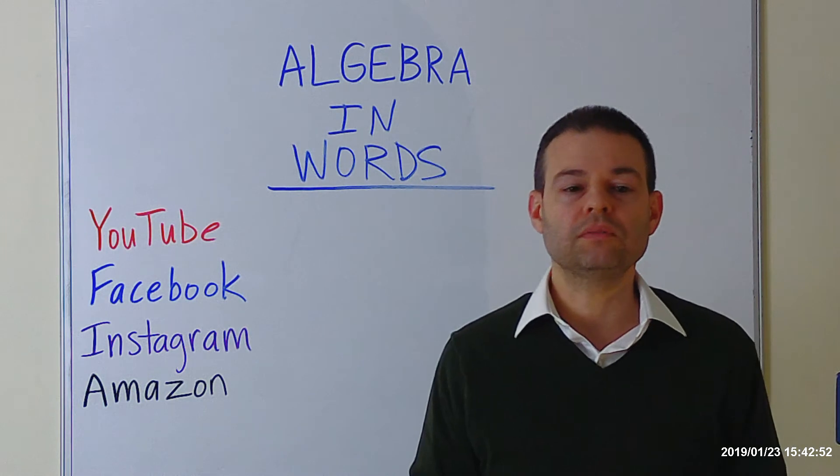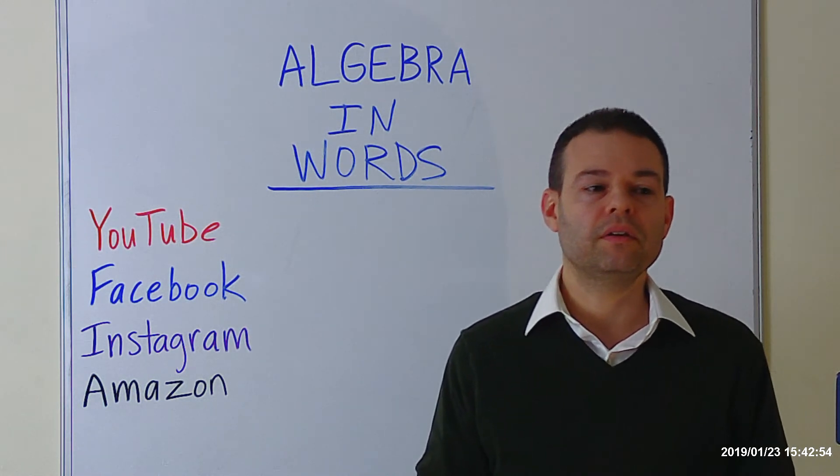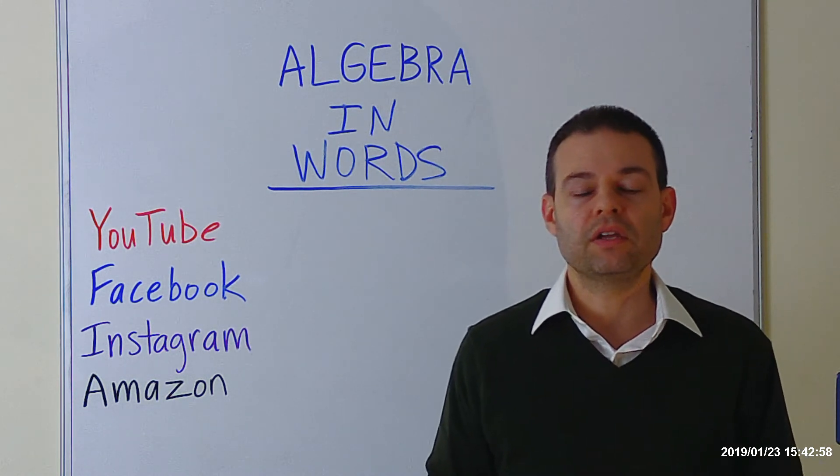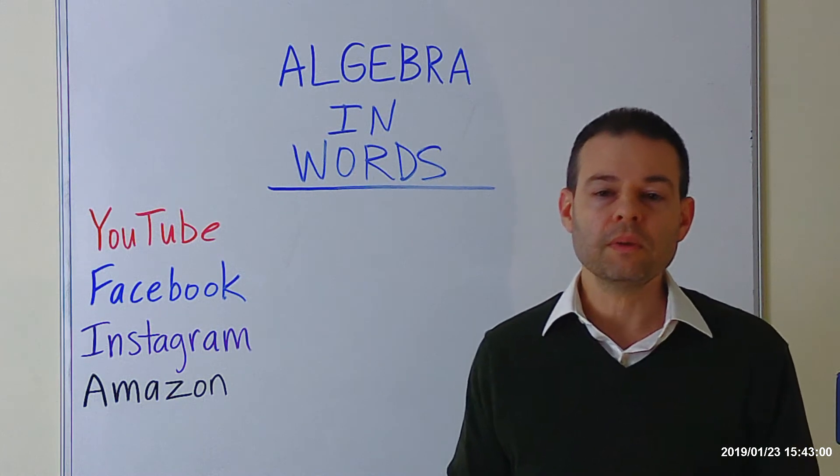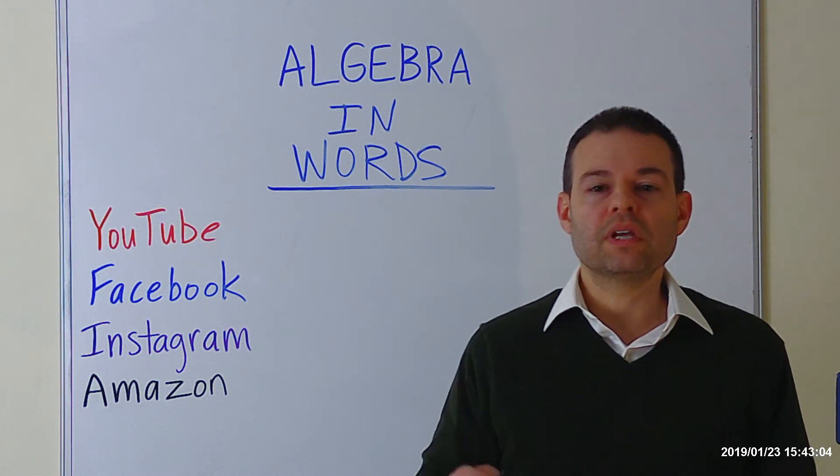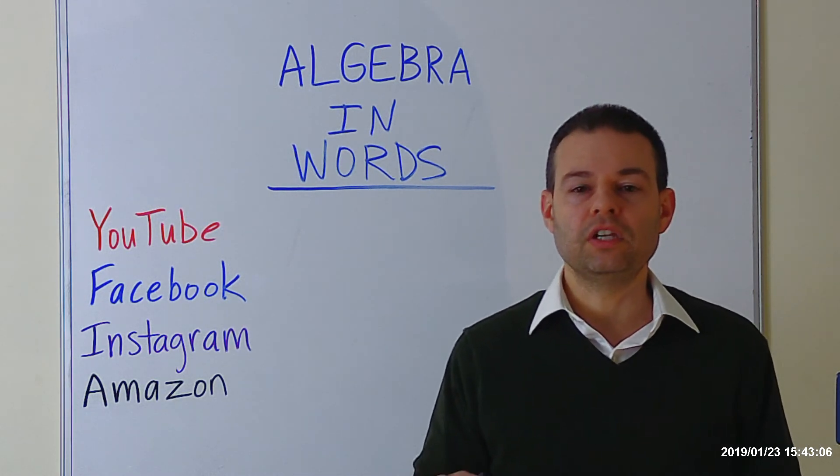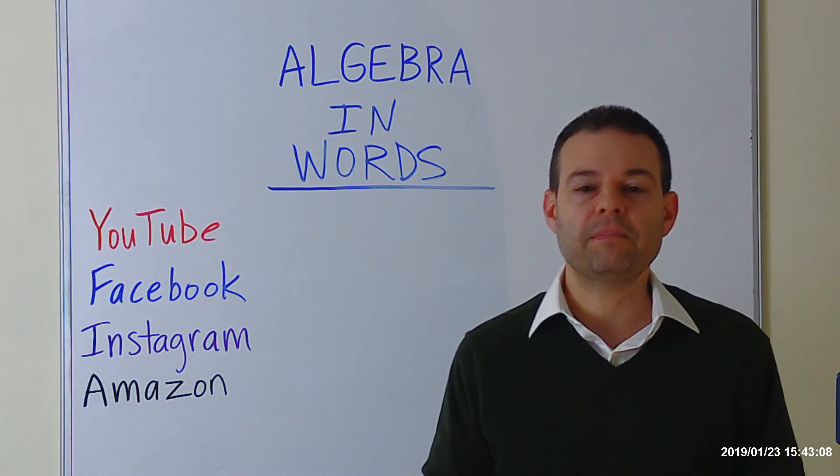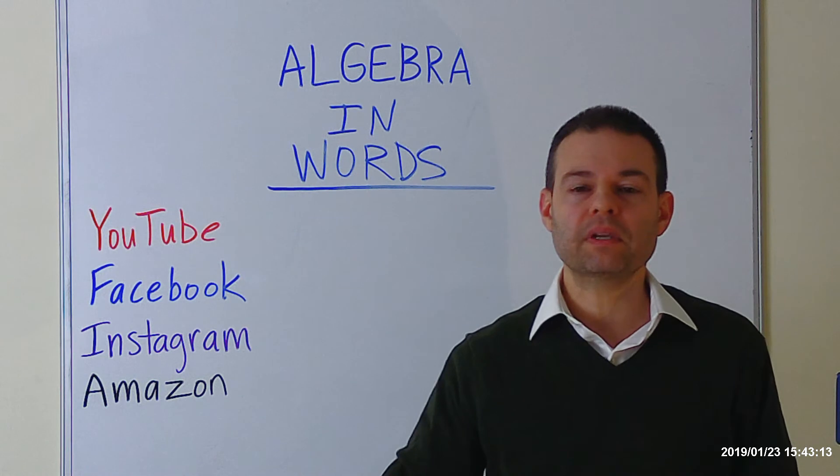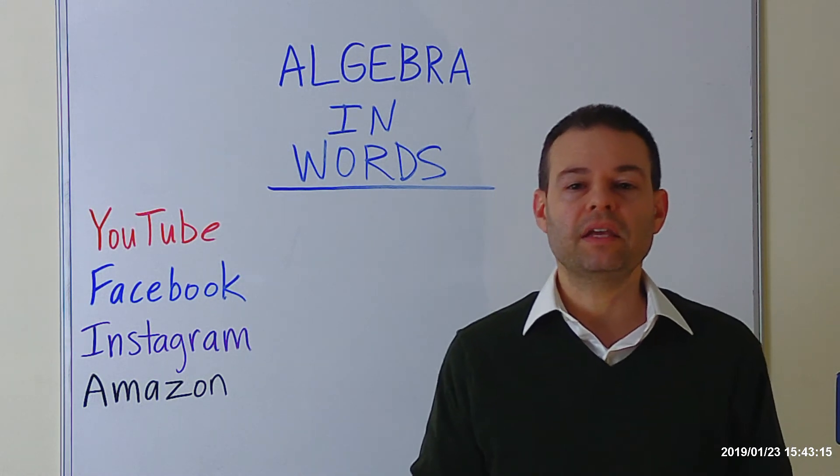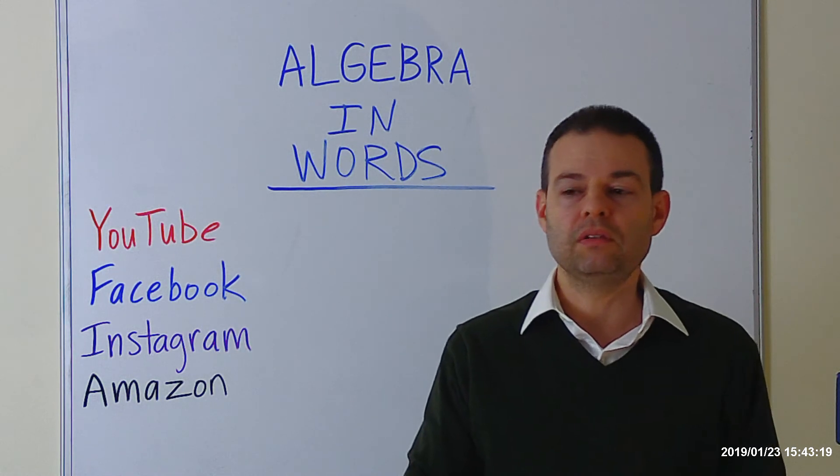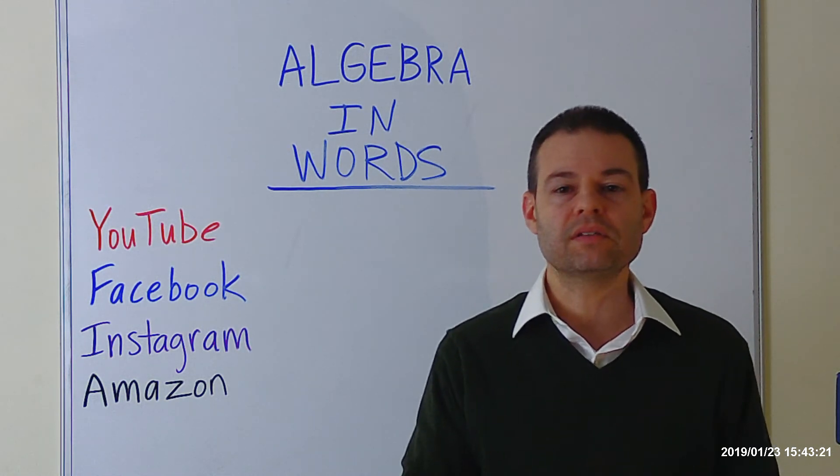Secondly, with the Kindle version, you can read it on basically any smart device or a computer. All you need is the free Kindle app. But in addition to that, you can use the hyperlinks that are in each e-book. And I think that's an added benefit because it can bring you to different connected topics that are related. And it can even take you right to the definition of a word if you run into it and you need to know what it is instantly.